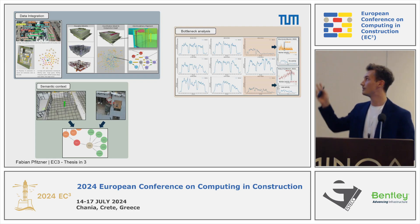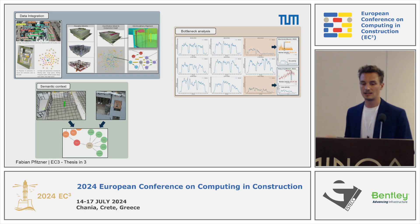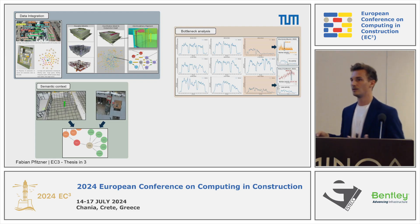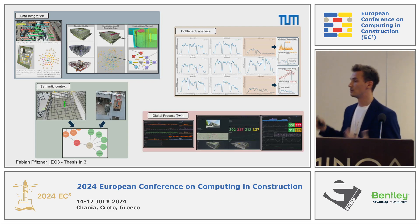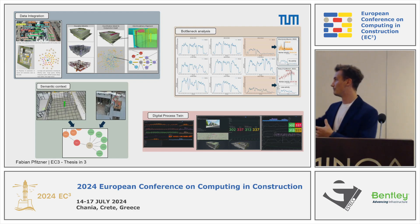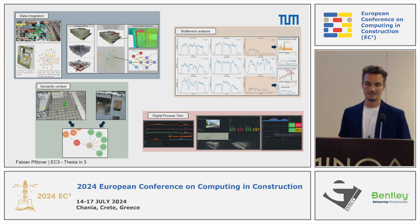This helps us analyze bottlenecks of certain processes by looking at large amounts of data. For example, you can see here when workers are taking breaks and some correlation with weather data. This needs to be further developed so that we eventually get a digital process twin to support construction management with early information about delays. Thank you for your attention.